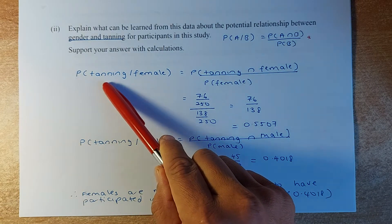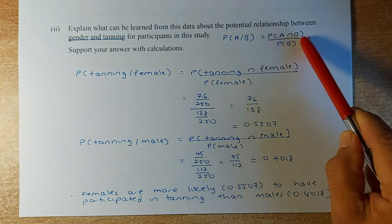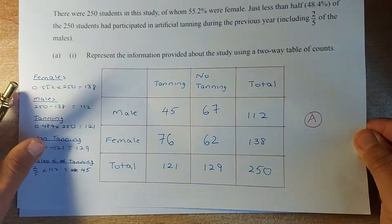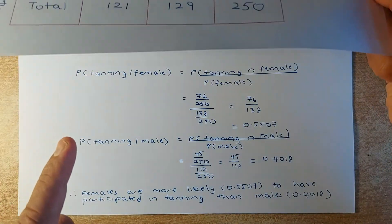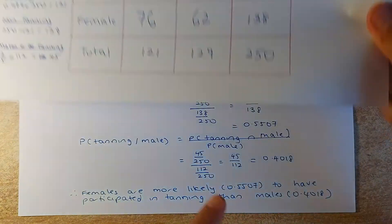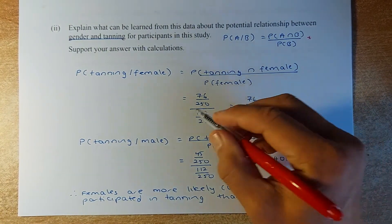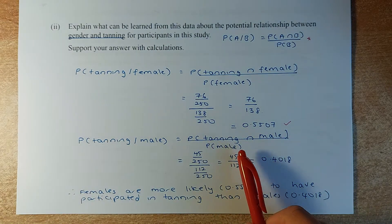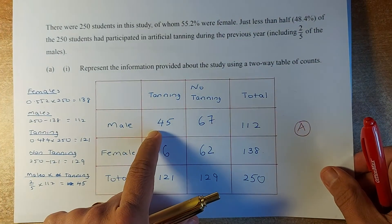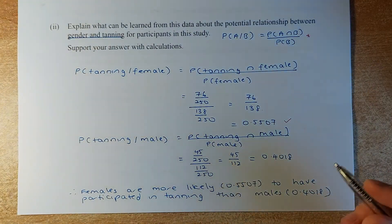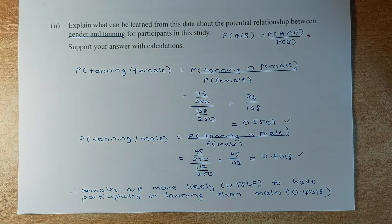They ask you to calculate the probability of tanning given female. So P(tanning and female) divided by P(female). Looking at the table: tanning and female is 76 over 250, and probability of female is 138 over 250. When you divide them, the 250 cancels out, giving 76 over 138, and the answer is 0.5507. Similarly, for the conditional probability of tanning given male: tanning and male is 45 over 250, and male is 112 over 250. Cancel the 250s to get 45 over 112, and the answer is 0.4018.